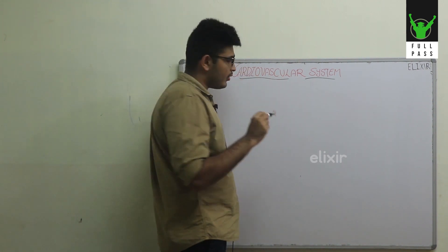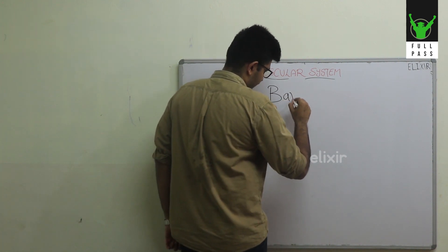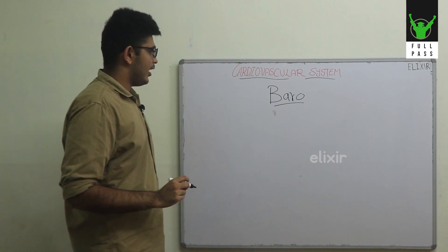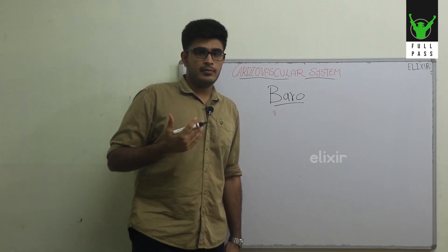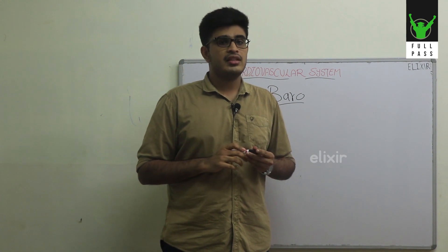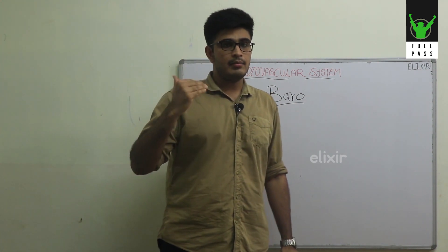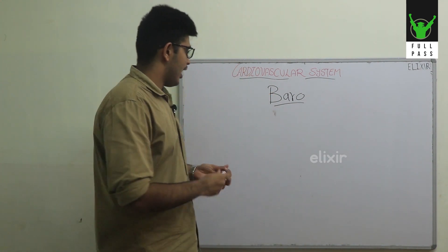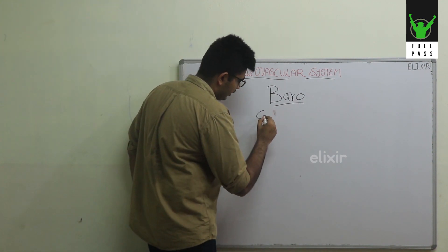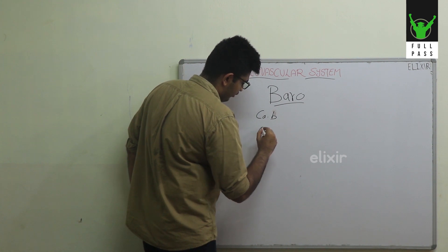Here you have to know about a reflex known as the baroreceptor reflex. The baroreceptor reflex is a normal protective reflex that maintains your normal blood pressure. The stimulus for this reflex is an increase in blood pressure, and the receptors are located in the carotid body and the aortic body.